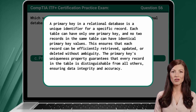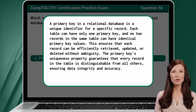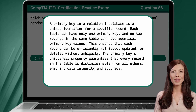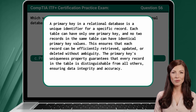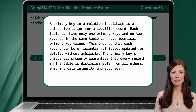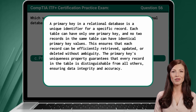This ensures that each record can be efficiently retrieved, updated, or deleted without ambiguity. The primary key's uniqueness property guarantees that every record in the table is distinguishable from all others, ensuring data integrity and accuracy.